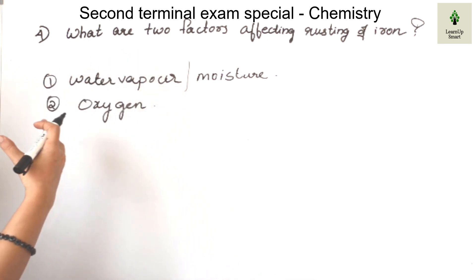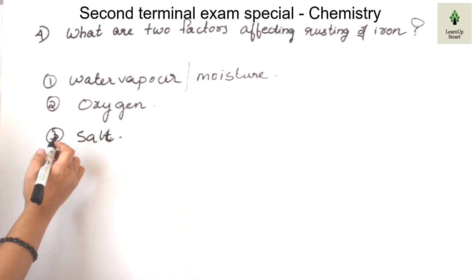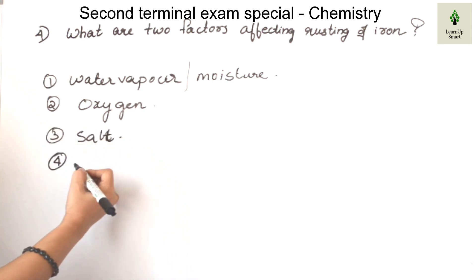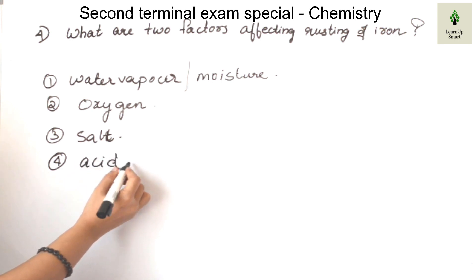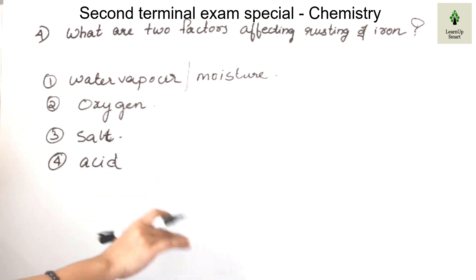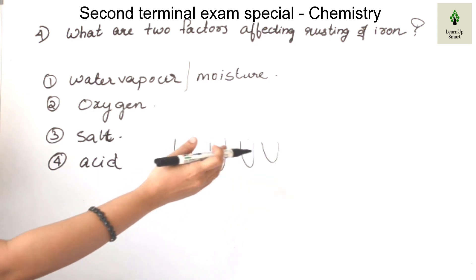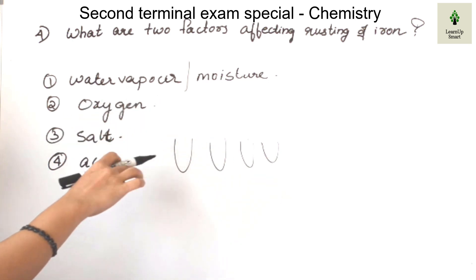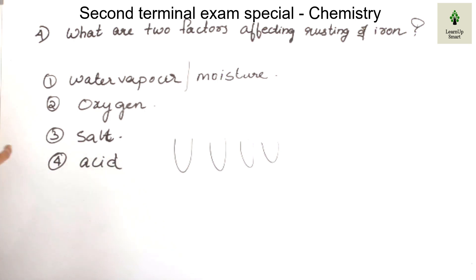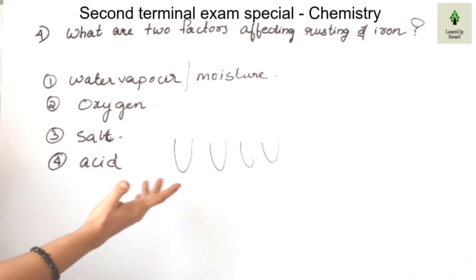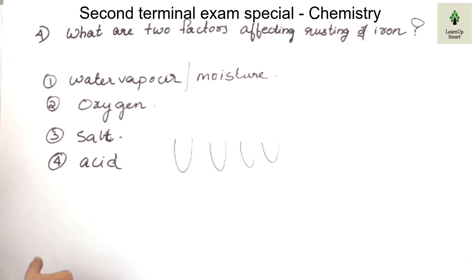We learn how rusting happens. Salt and acid also affect rusting. There are actually 4 factors affecting corrosion: moisture, oxygen, salt, and acid. We learned rusting through 3 tests to understand when rusting will happen.